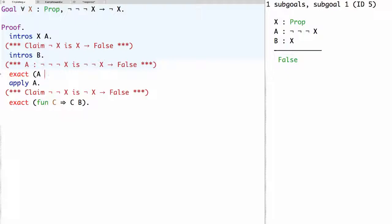In fact, the proof of the double negation of x is what we have as an exact proof term below now, this lambda c, c b. So we can finish the proof here using exact a applied to lambda c, c b.